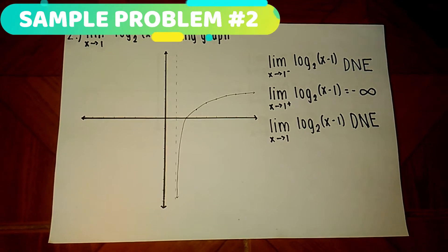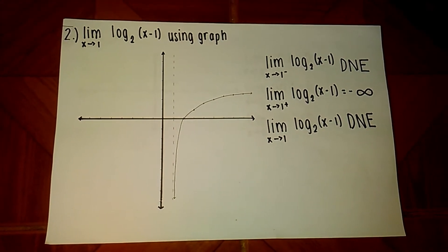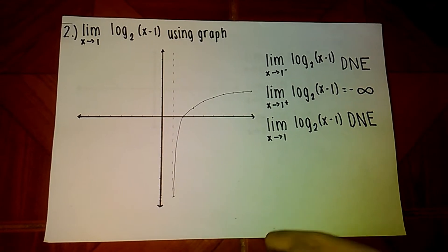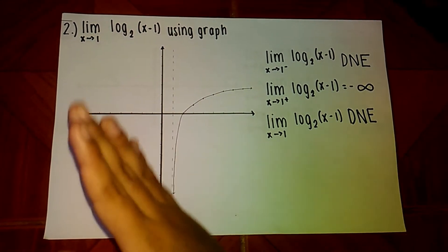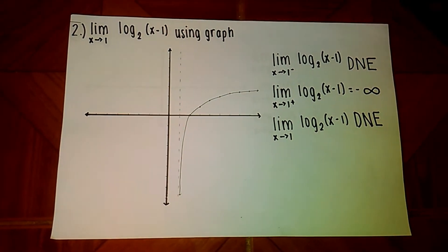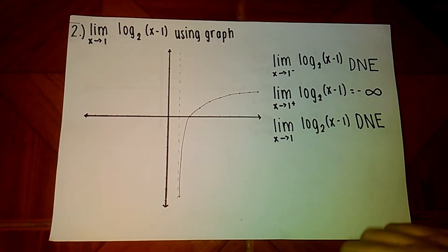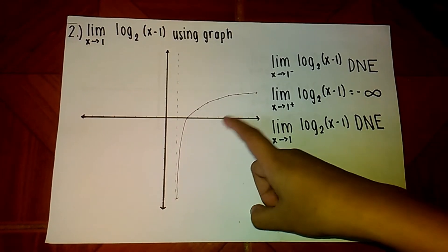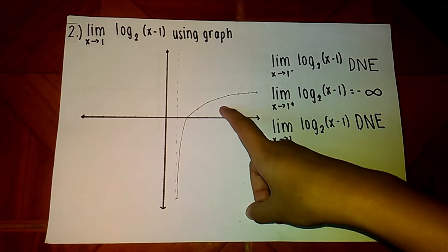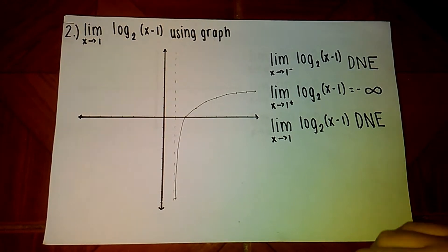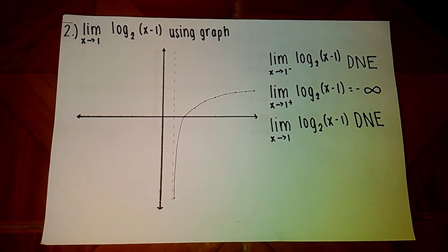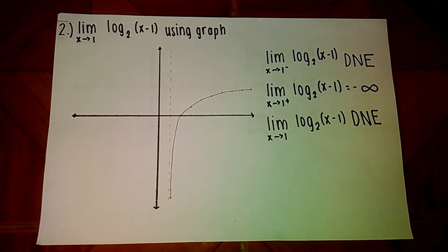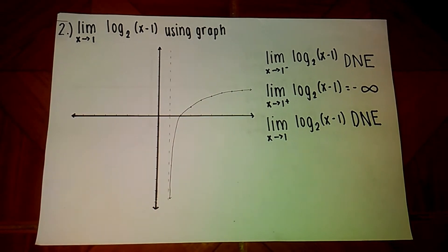In this example, we will find the limits of transcendental functions using the graphical method. The example is the limit of logarithm base 2 of the quantity (x minus 1) as x approaches 1 using a graph. As you can see in the graph, at the left side there is no graph, so the limit of f(x) as x approaches 1 from the left does not exist. At the right side, the graph gets smaller and smaller, or more and more negative. So the limit of f(x) as x approaches 1 from the right is negative infinity. Since the left-hand and right-hand limits are not equal, the limit of log base 2 of (x minus 1) as x approaches 1 does not exist.